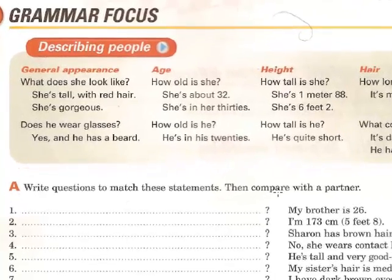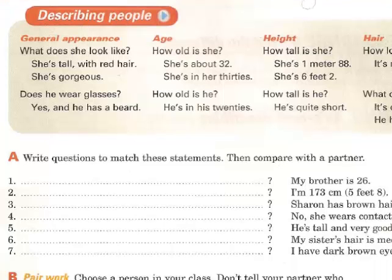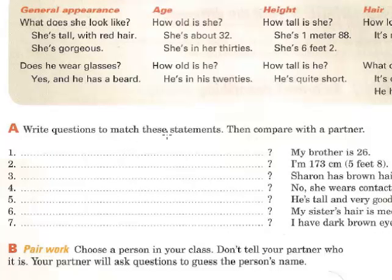Practice by trying to describe a partner, classmate, your teacher, or anyone you want. Write questions to match these statements, then compare with a partner. For example: 'My brother is 26' — the question would be: 'How old is your brother?' Complete the rest of the questions. That's all for today — goodbye!